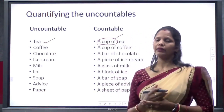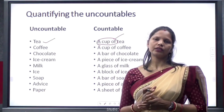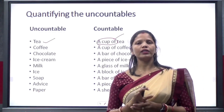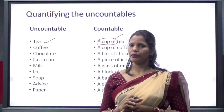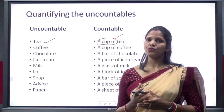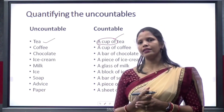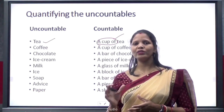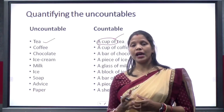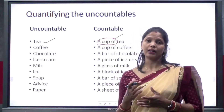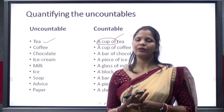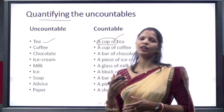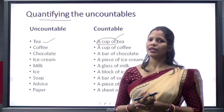Today we came to know that uncountables are nouns which we cannot count and they always go with a singular verb form. There are also some nouns ending in S which look like plural but are actually uncountable and go with singular verb forms. If we want to make an uncountable noun countable, we have to add quantifying units.